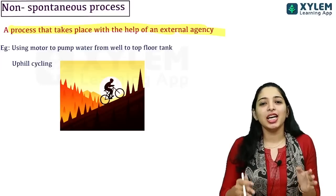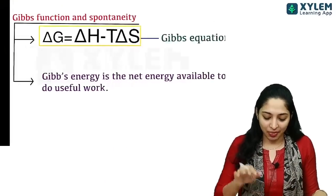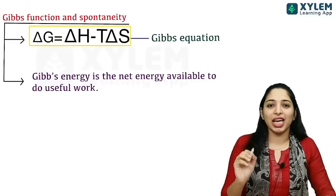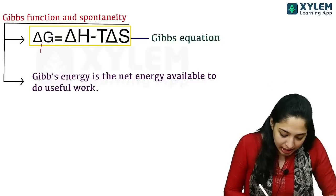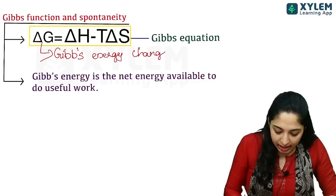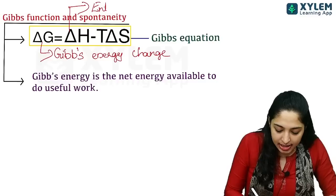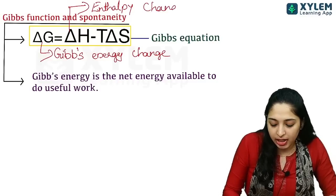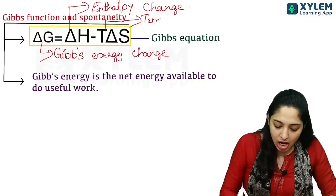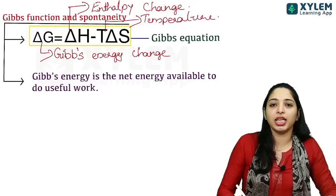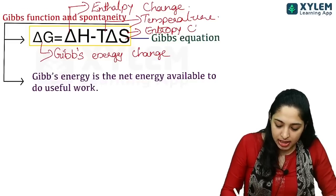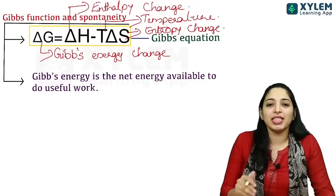This is a very important topic: the relation between spontaneity and Gibbs energy change. The equation is delta G equal to delta H minus T delta S. The term delta G is the Gibbs energy change, delta H is the enthalpy change, T is temperature, and delta S is entropy change.